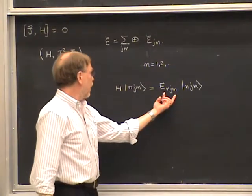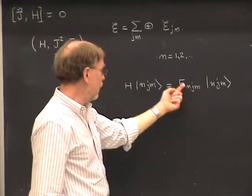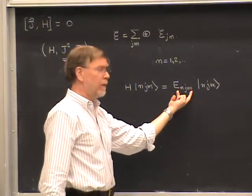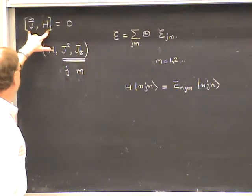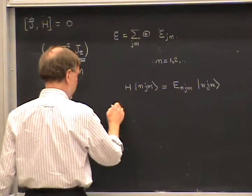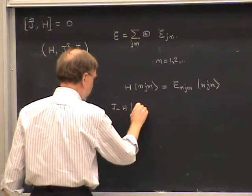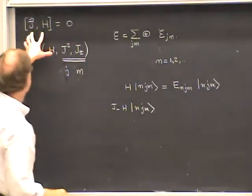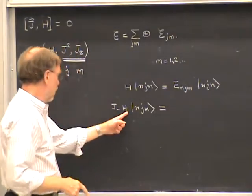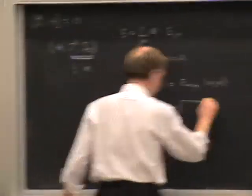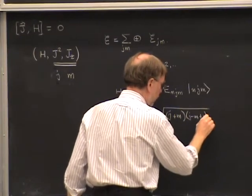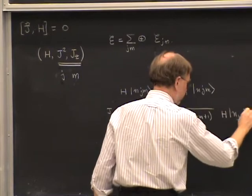Diagonalizing gives some energy spectrum — in general different for each subspace. For simplicity, let's suppose the spectrum is discrete and non-degenerate. Then we can label energy eigenvalues in a J-M subspace by a quantum number N, which just counts them in order. So the energy eigenstates are labeled by three quantum numbers N, J, M, and H acting on |N J M⟩ brings out an energy E_NJM times |N J M⟩.